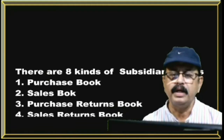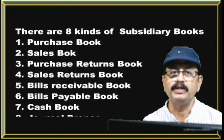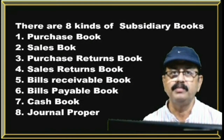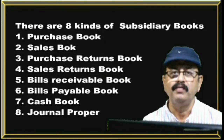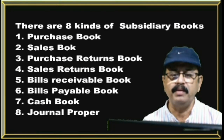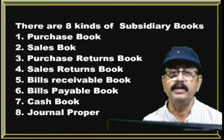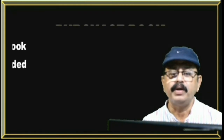The next topic is subsidiary books. There are 8 kinds of subsidiary books: the first one is purchase book, second is sales book, third is purchase returns book, fourth is sales returns book, fifth is bills receivable book, sixth is bills payable book, seventh is cash book, and eighth is journal proper.